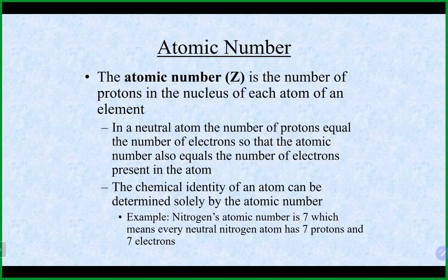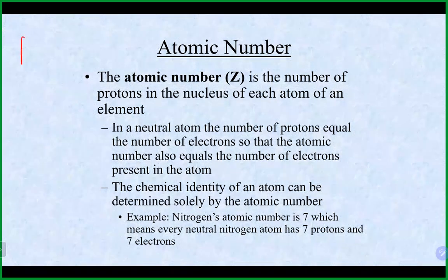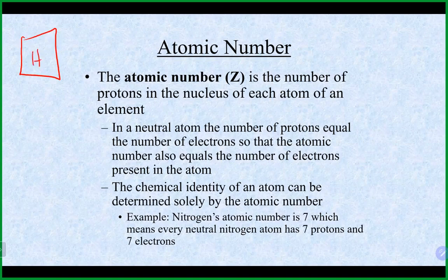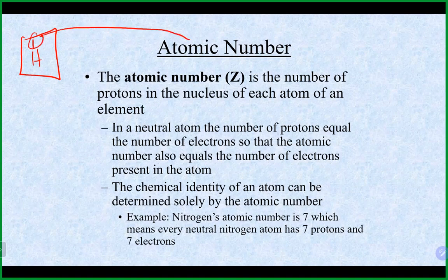On the periodic table, the atomic number is found above the symbol. For example, hydrogen is one. That number above the symbol is the atomic number. It is important to remember that the definition of atomic number is only the number of protons — not electrons. In a neutral atom it will also tell you how many electrons, but the definition itself is just the number of protons.